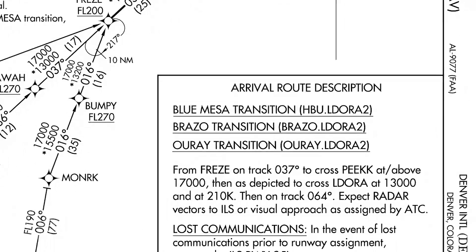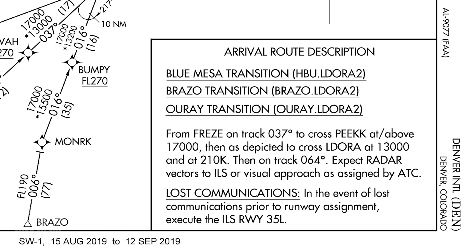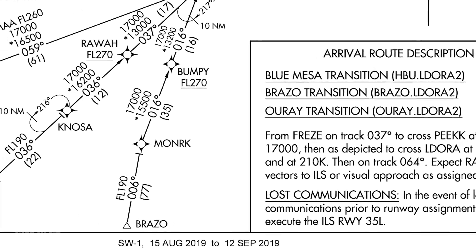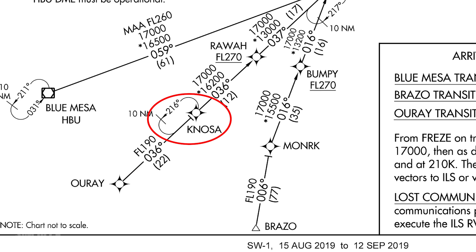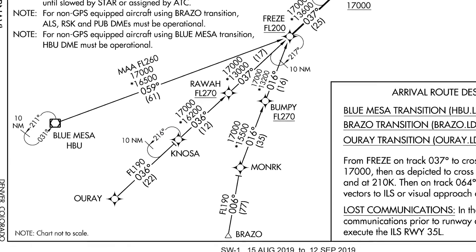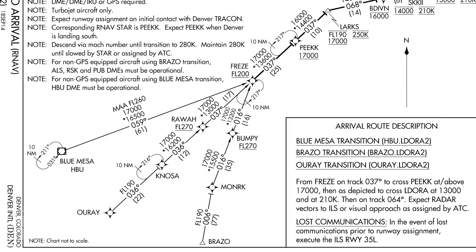If you lose communication with ATC, you are told to fly an ILS approach for runway 35L. The route we're flying requires the O-Ray transition, which has us track a 036 heading to FREEZE. At CANOSSA and also at HBU, FREEZE, and PEAK, you'll notice an oval shape — these are points where you can enter a holding pattern if needed. This might be done to create separation between aircraft or if you're too high on the descent, allowing the issue to be corrected before moving on.